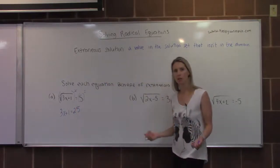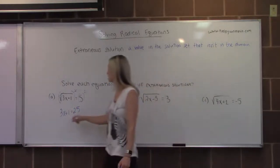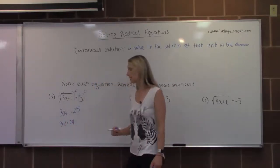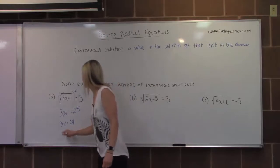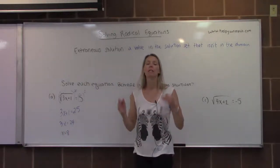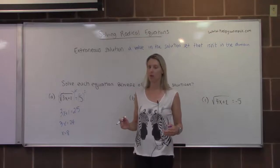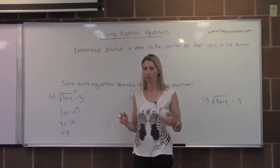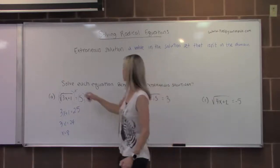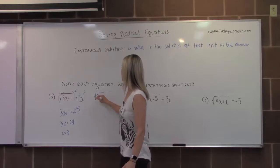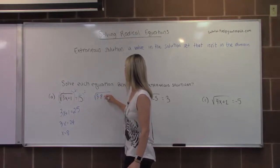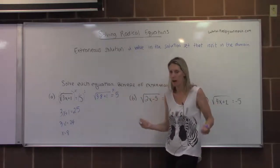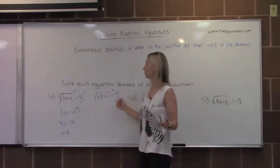Now I no longer have the radical, so I can solve for x like a regular linear equation. I'll subtract 1 from both sides, giving me 3x equals 24. Divide both sides by 3 and I get x equals 8. So 8 is the only possible solution. We have to plug it in to verify. So plugging into the original equation: does the square root of 3 times 8 plus 1 really equal 5? I'll put a question mark over it because it might not.